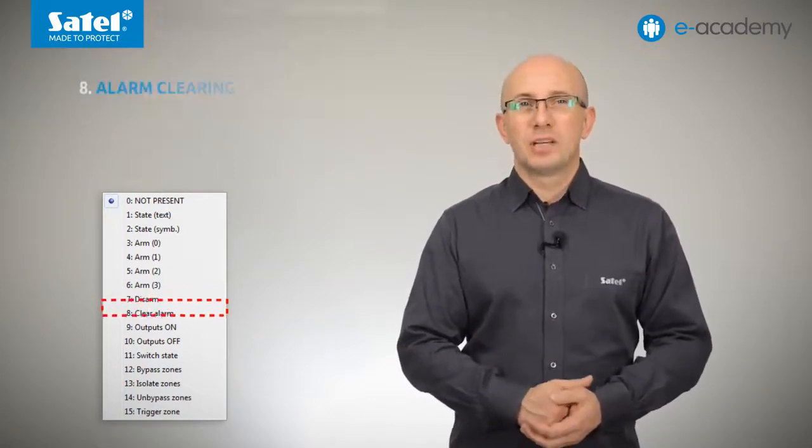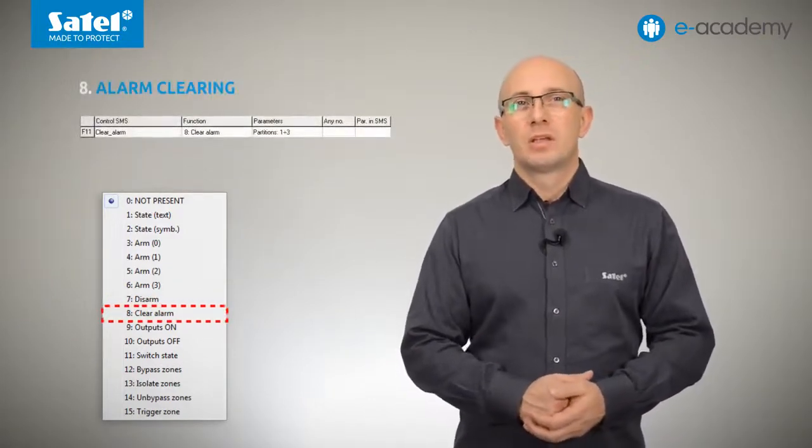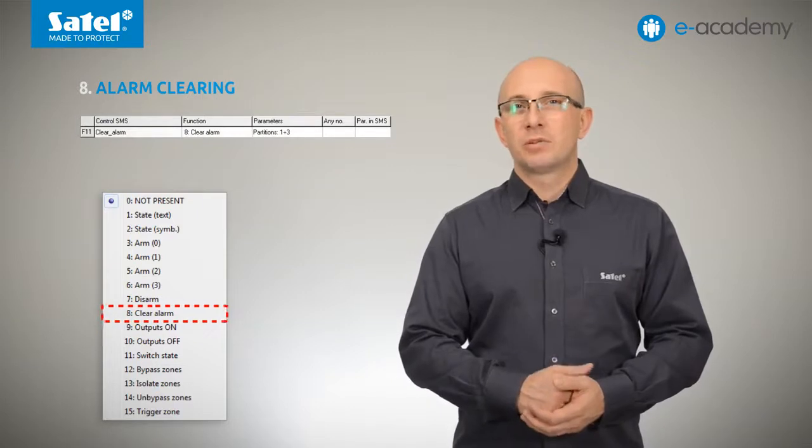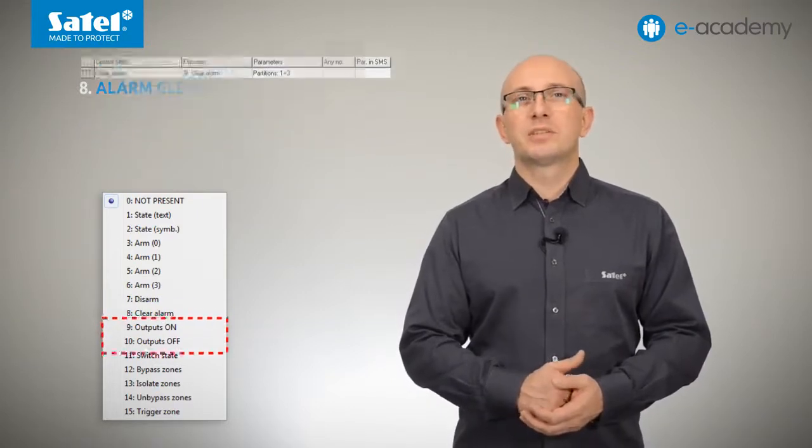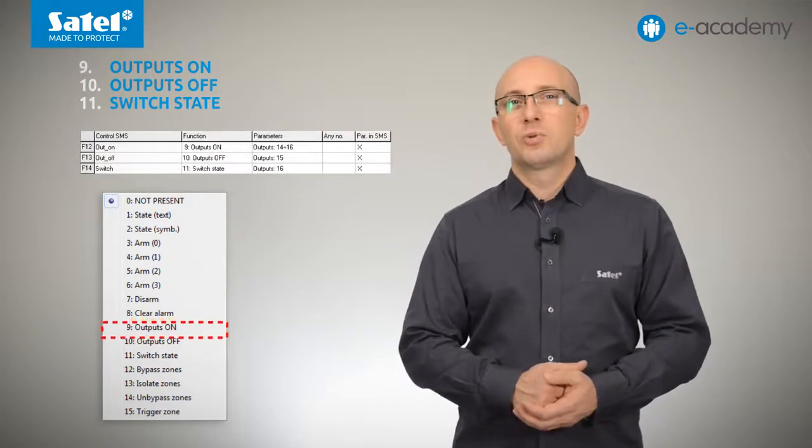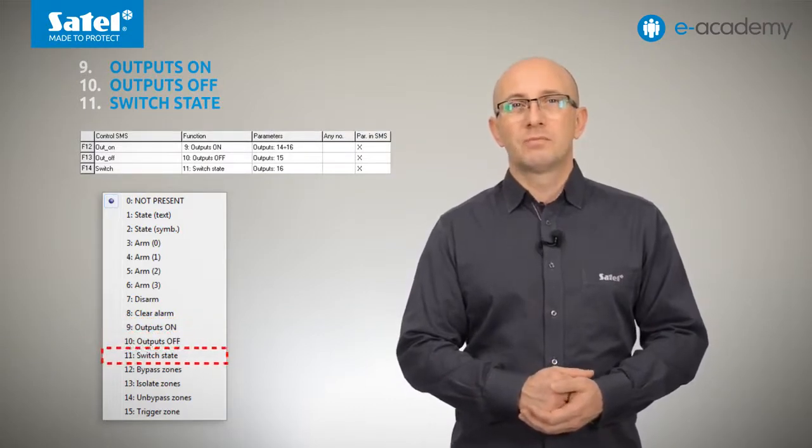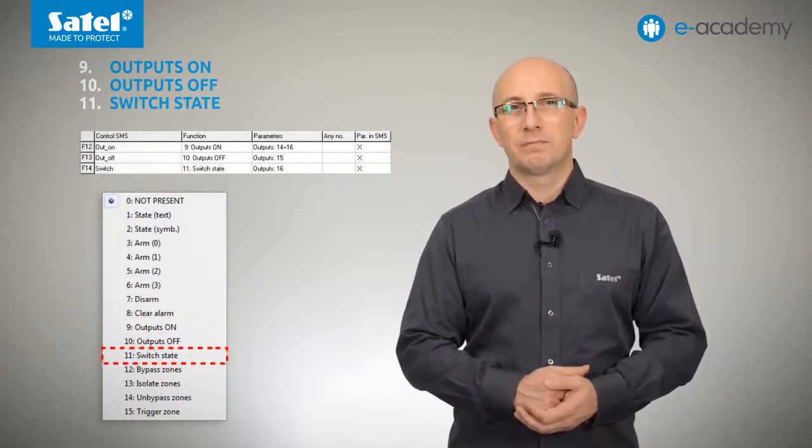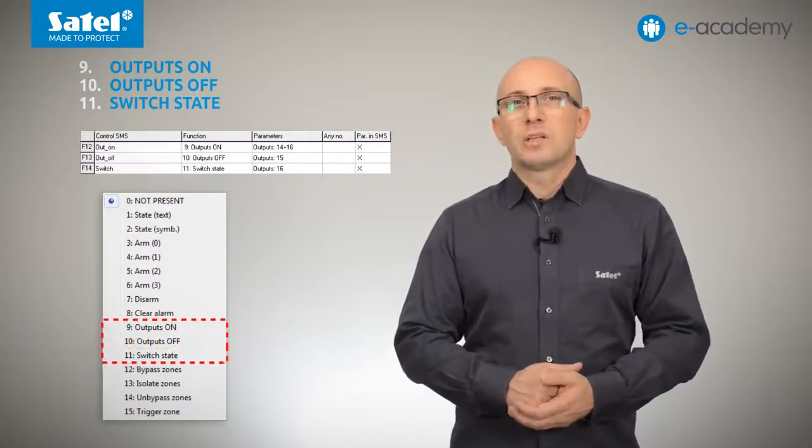Function number eight is alarm clearing. Here, you should also indicate the partitions to which the command applies. Items 9, 10 and 11 are outputs on, outputs off and switch state respectively.